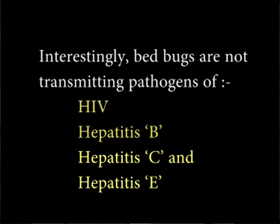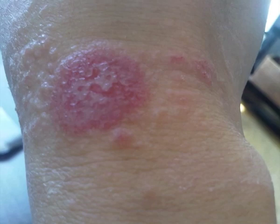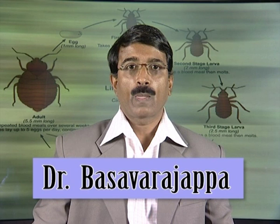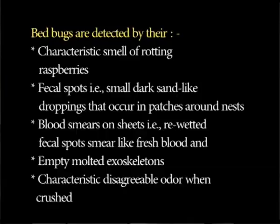Cimicosis is a skin manifestation that develops prominent blisters due to bed bug bites. Harborage of bed bugs: Bed bugs are parasitic insects that spend only a tiny fraction of their life cycles with hosts. Once they finish feeding, they relocate to a place close to a known host, commonly in or near beds or couches in clusters of adults, juveniles and eggs — called harborages. Detection of bed bugs: Bed bugs are detected by their characteristic smell of rotting raspberries, fecal spots (small dark sand-like droppings in patches around nests), blood smears on sheets, re-wetted fecal spots that smear like fresh blood, empty moulted exoskeletons, and a characteristic disagreeable odour when crushed.